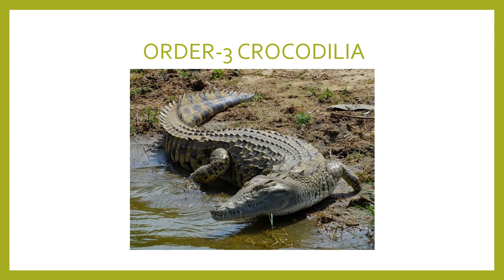The dentition is thecodont. The quadrate is immovable. They have procoelous vertebrae, and the heart is made up of four chambers. Cloacal aperture is a longitudinal slit. Bicephalous abdominal ribs are present, and the diaphragm is incomplete. Males are with copulatory organs, i.e., penis. Example: Crocodile.